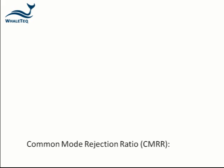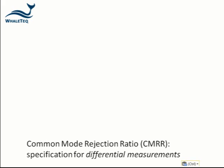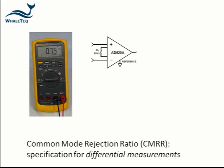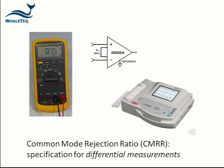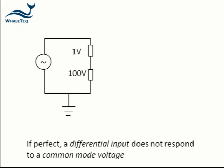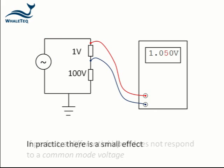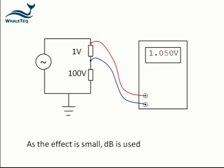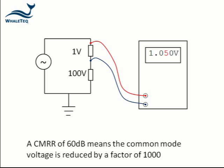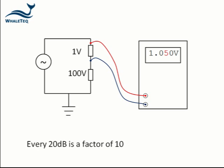Common mode rejection ratio is a typical specification for any equipment with a differential voltage measurement, including multimeters, differential amplifiers, and of course ECG equipment. In a perfect world, a differential input would not respond to any common mode voltage. In practice there is a small effect. Because the effect is small, the specification is normally declared in decibels or dB. A value of 60 dB means the common mode voltage is reduced by a factor of 1000. Every 20 dB is a factor of 10.